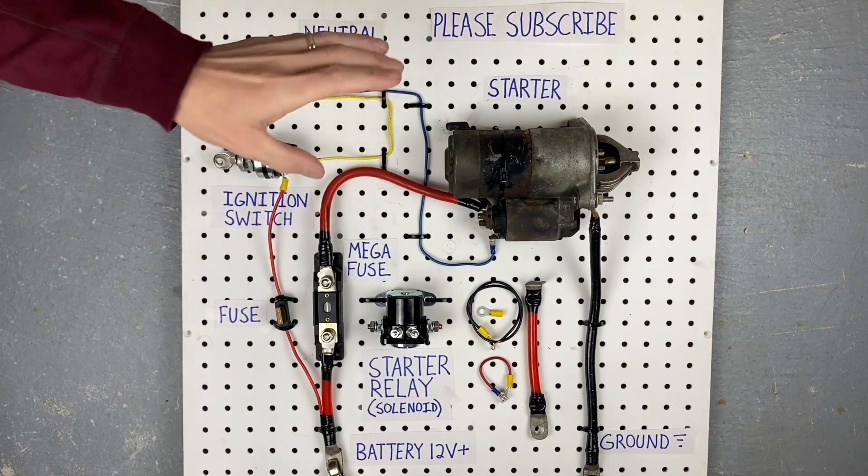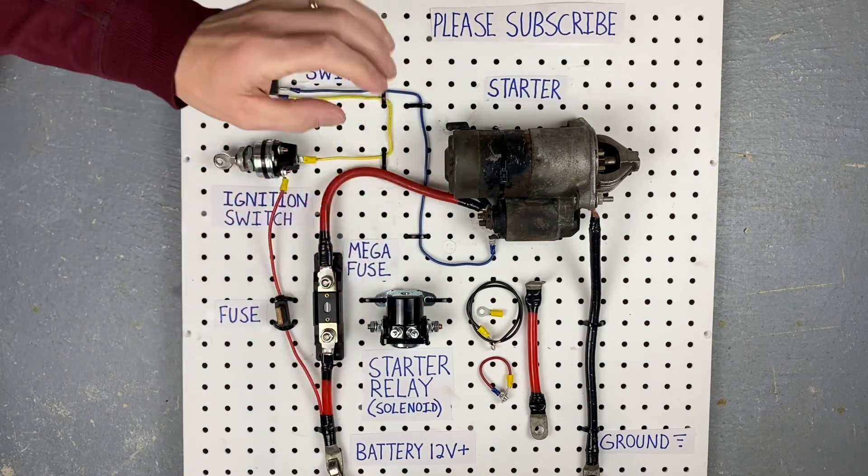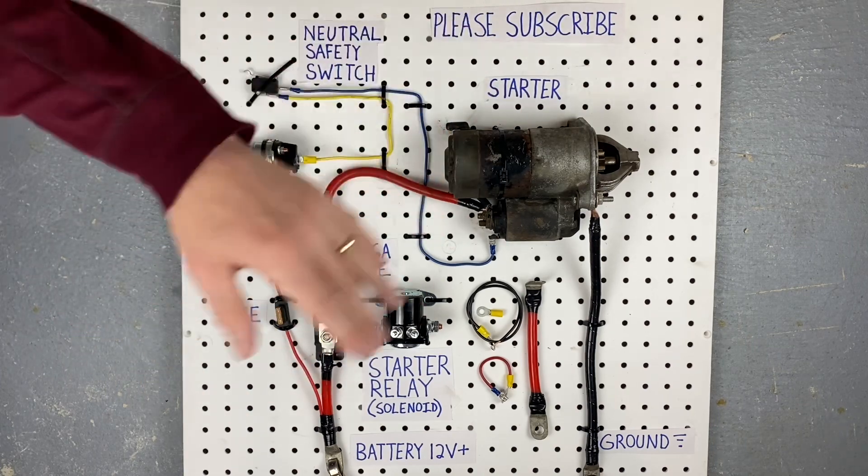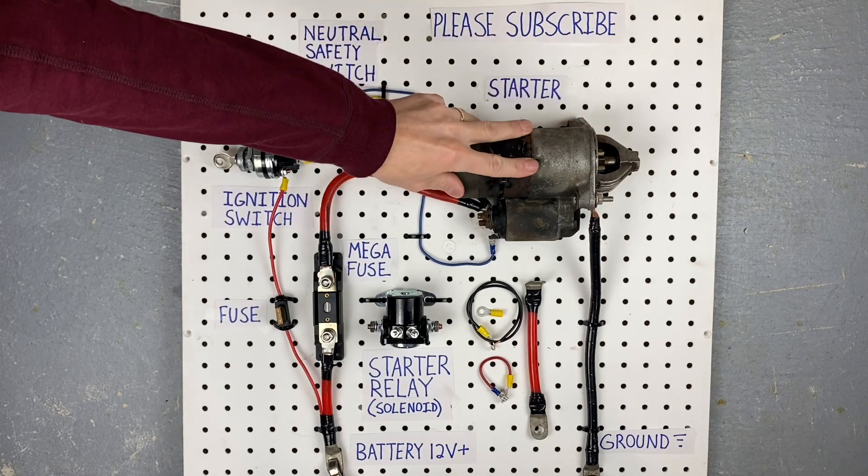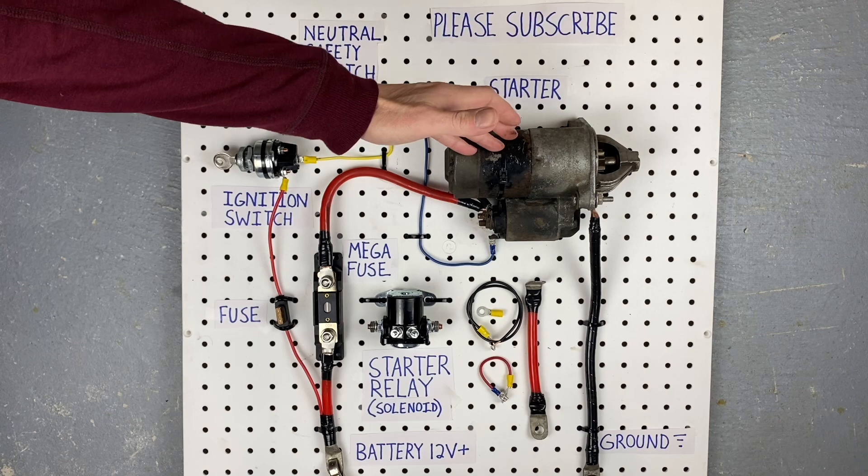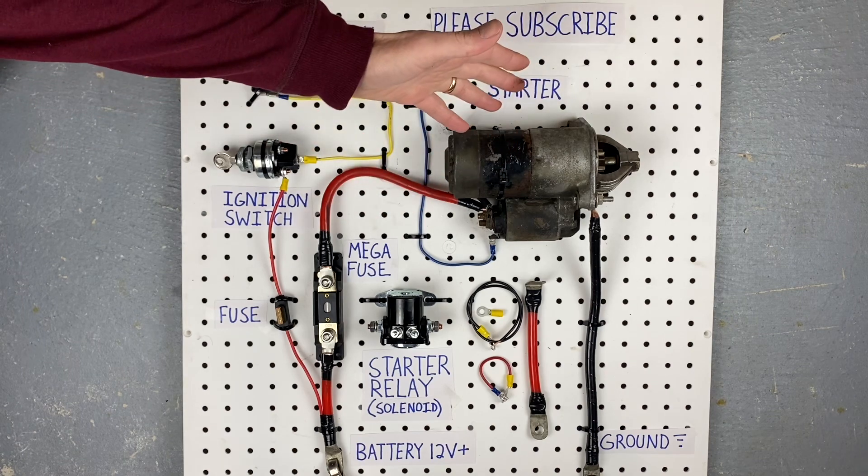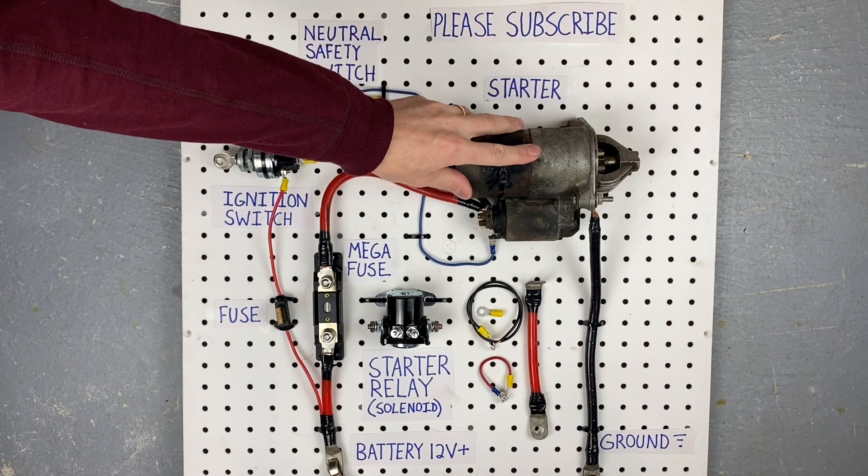So to start off with, let's go over all the components on the board. I'll tell you what they are and then after that we'll show you how to wire it. Now this right here is obviously the starter. Most starters are wired this exact same way. This one happens to be from a Mitsubishi, but you can pretend it's from any car you want because most of them are wired this way.